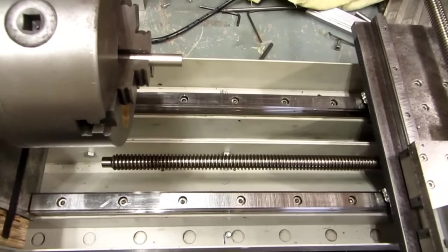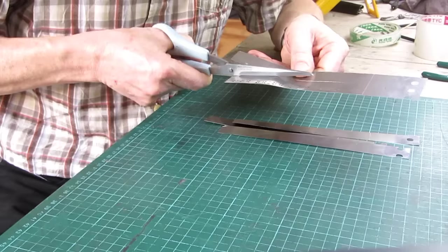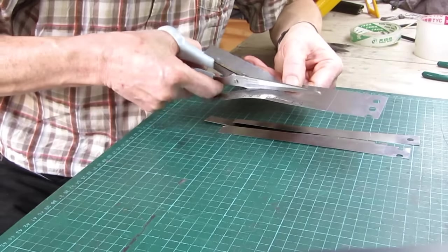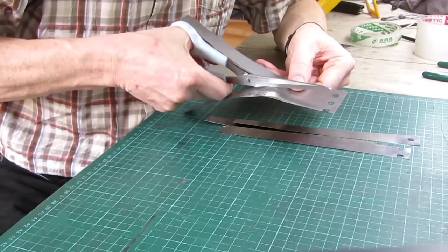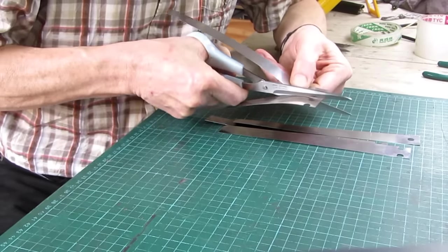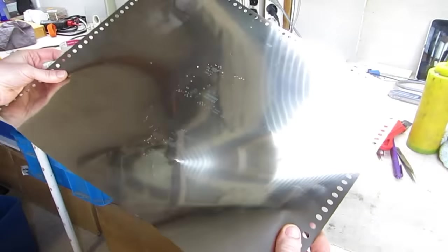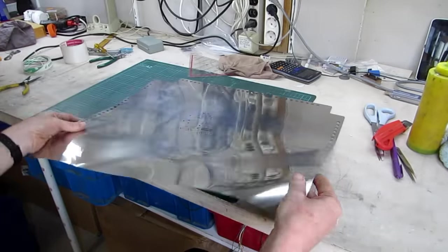The lead screw and linear rails should be kept clean from metal chips. I therefore built a flexible protection sheet. I cut metal strips from a thin metal sheet that was originally a printed circuit board stencil sheet.